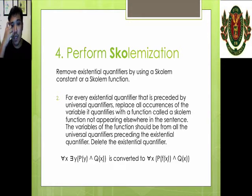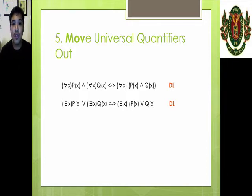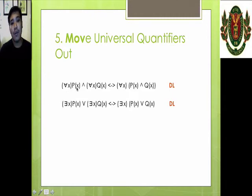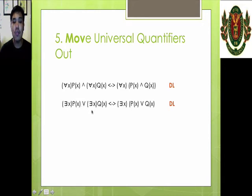Next is MOV — move universal quantifiers out. So for all X, P of X and for all X, Q of X — we just move them out: for all X, quantity P of X and Q of X — that's because of the distributive laws. And for some X, P of X, or for some X, Q of X — we move this one out: for some X, quantity P of X or Q of X.